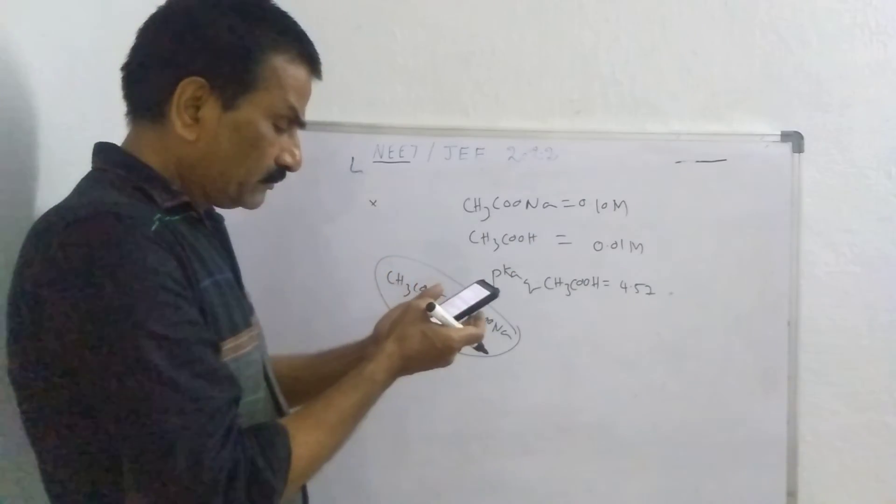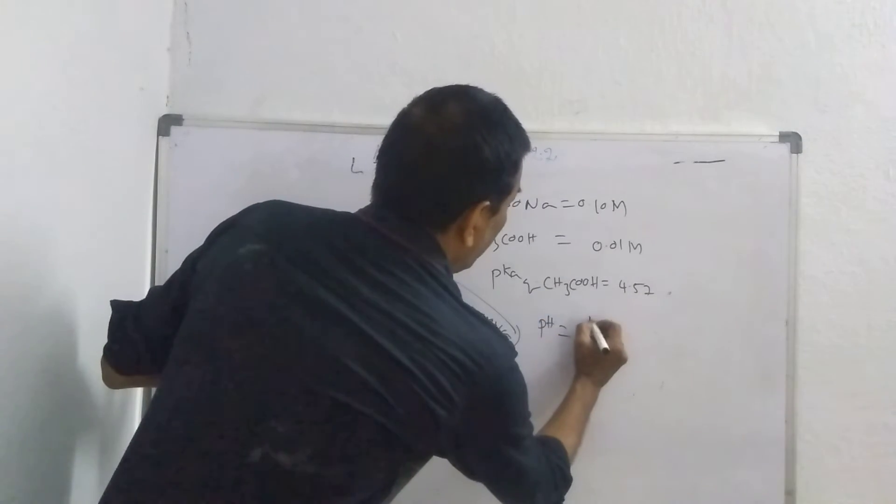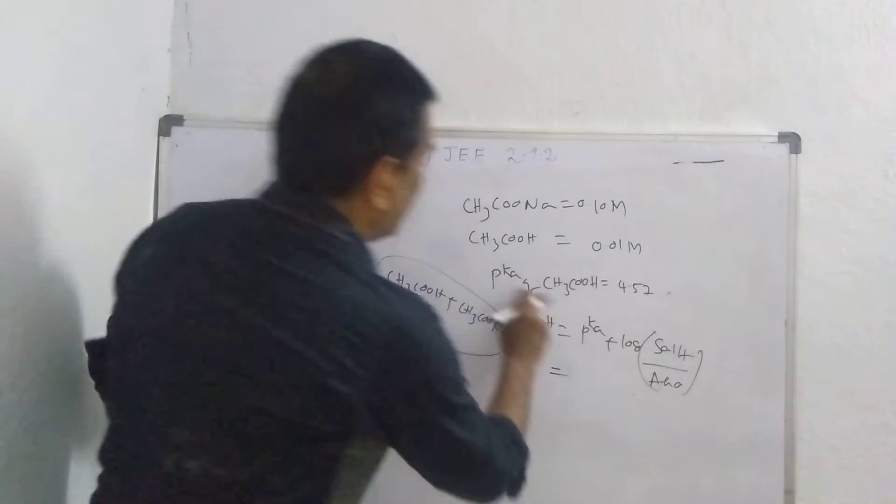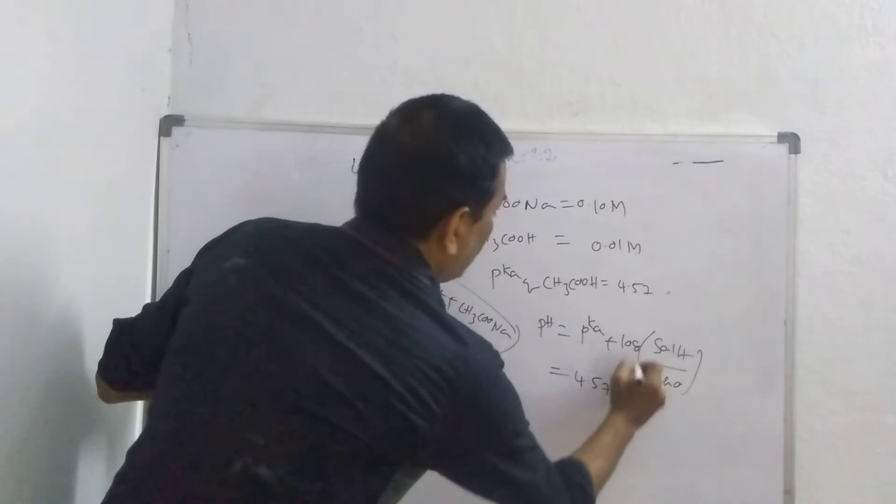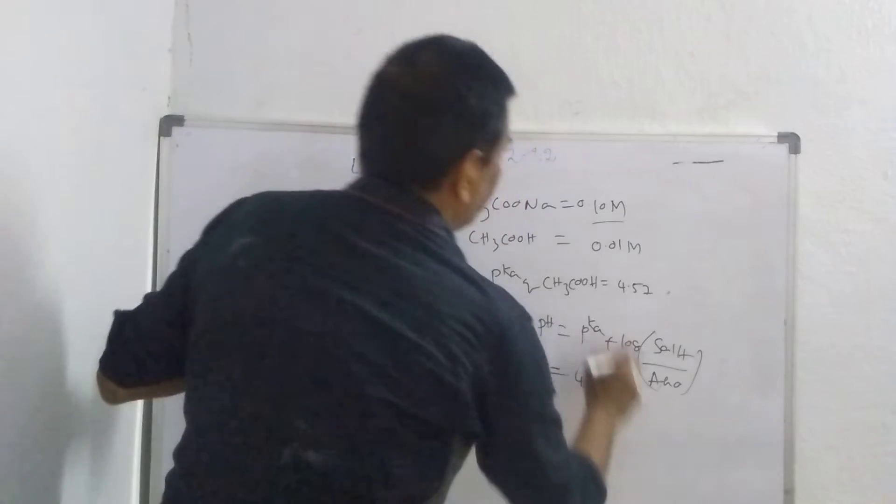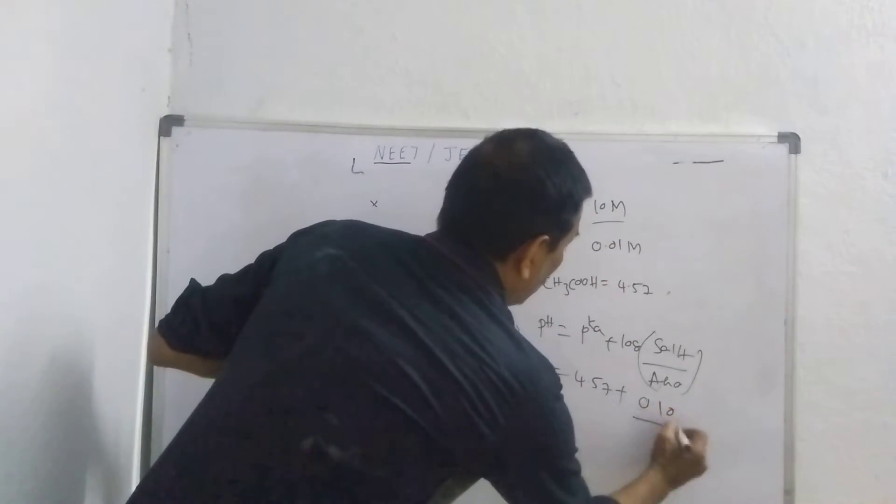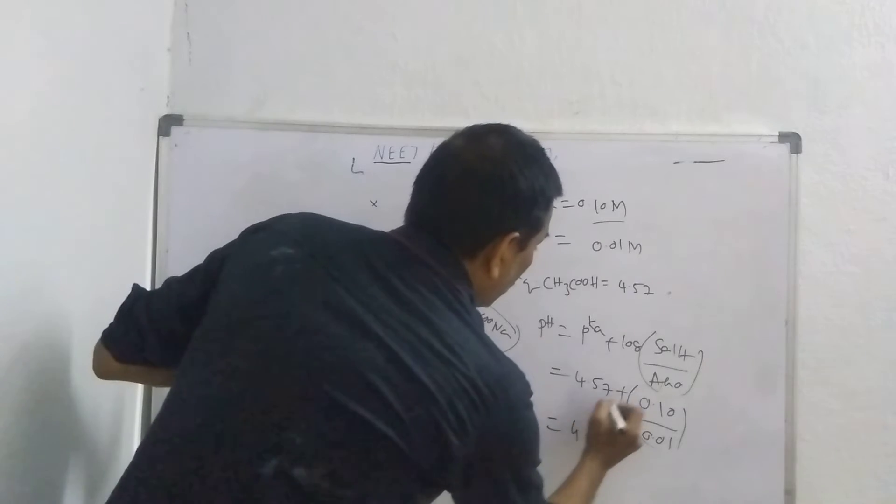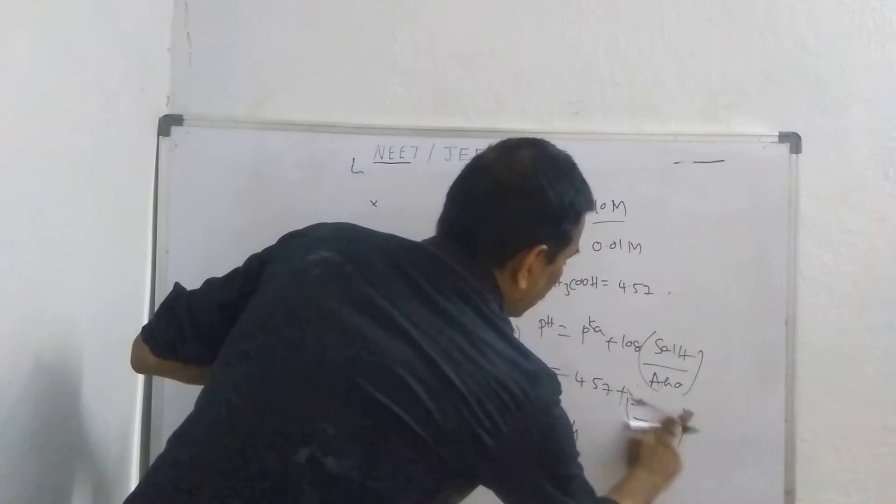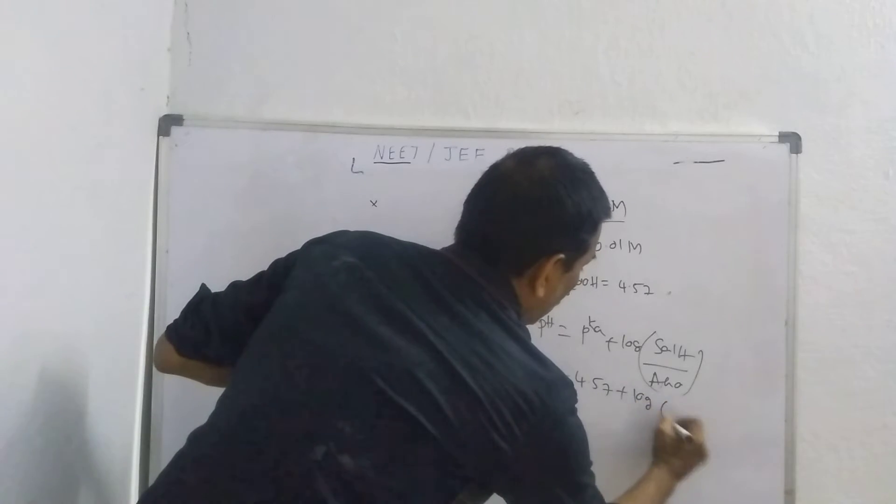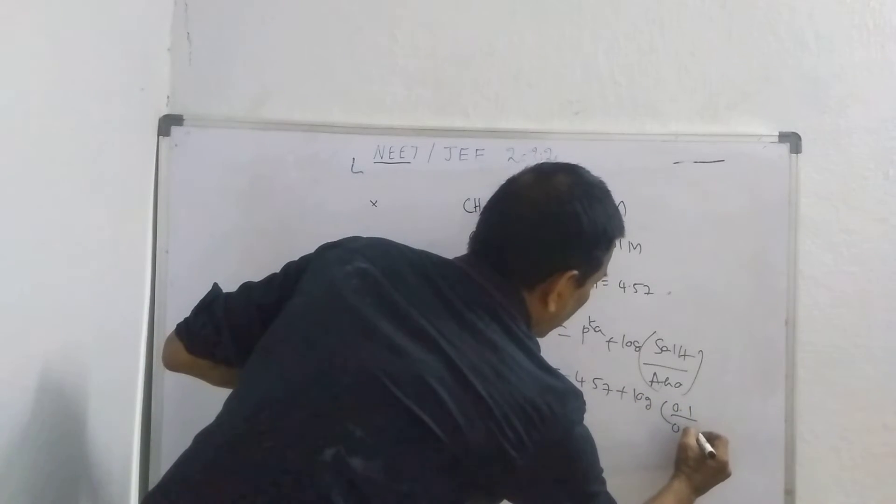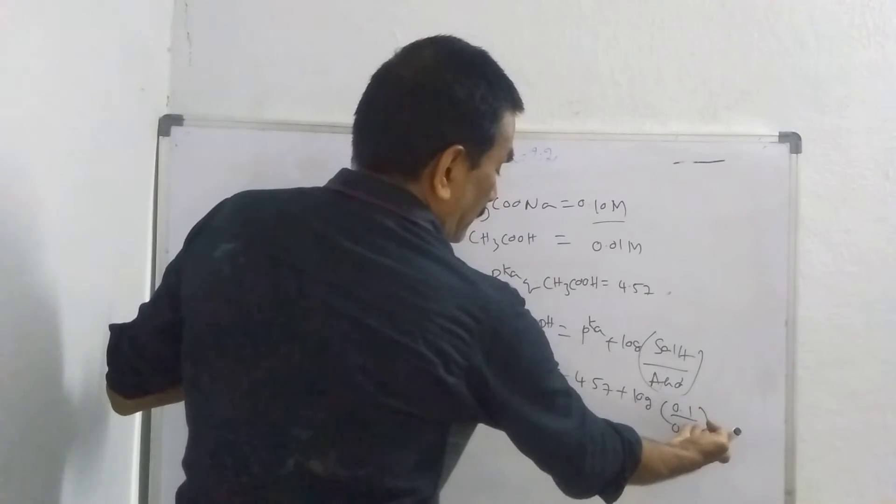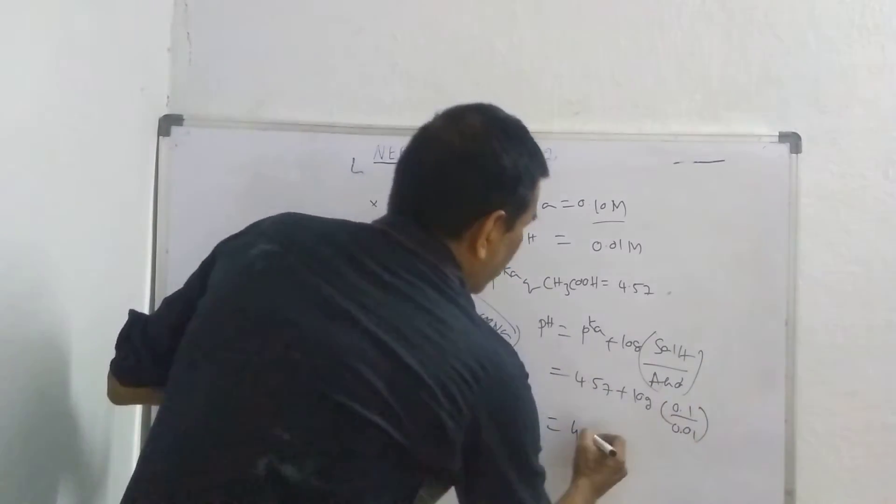Okay, we have, what we have? pH. What is the formula? pH is equal to pKa plus log concentration of salt by acid. So pKa has given 4.57, plus log salt, how much? 0.10, acid 0.01. If you substitute this one for log, log 0.1 upon 0.01. 4.57.